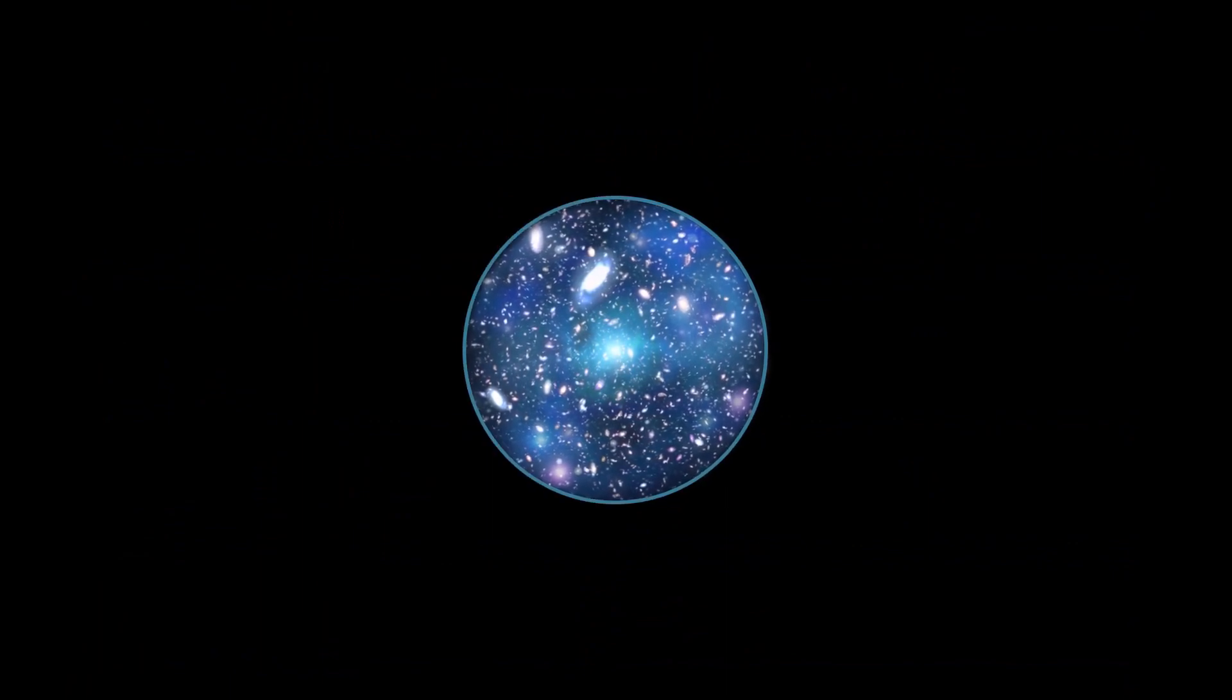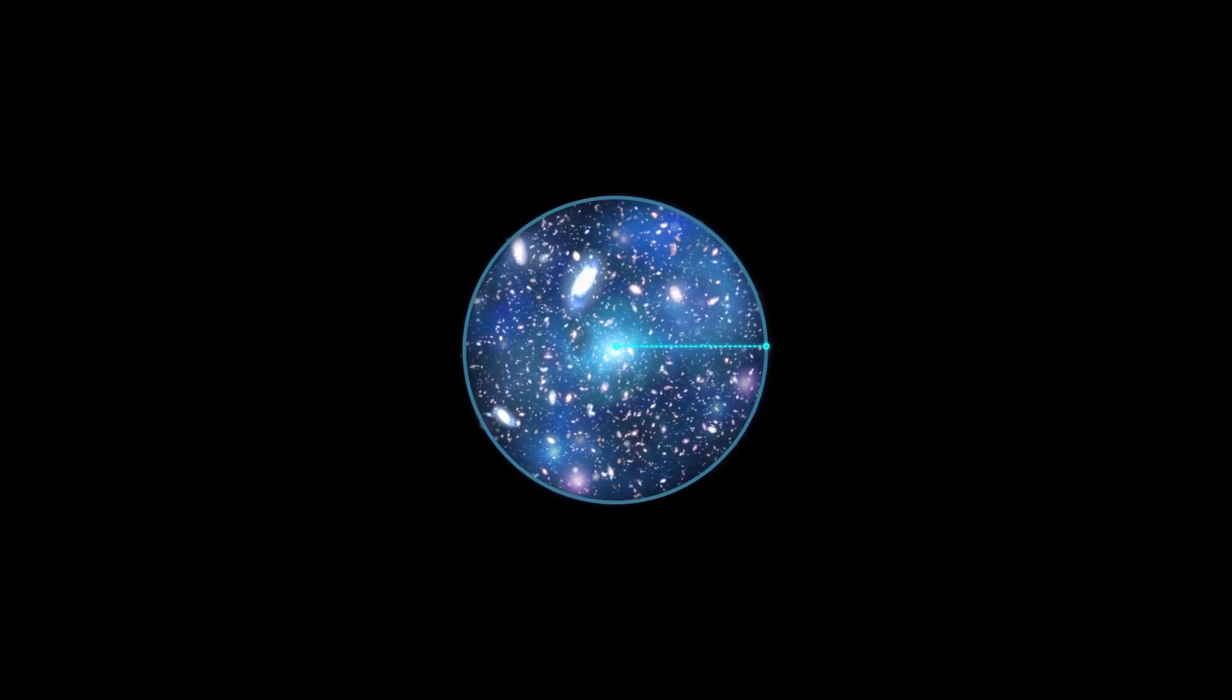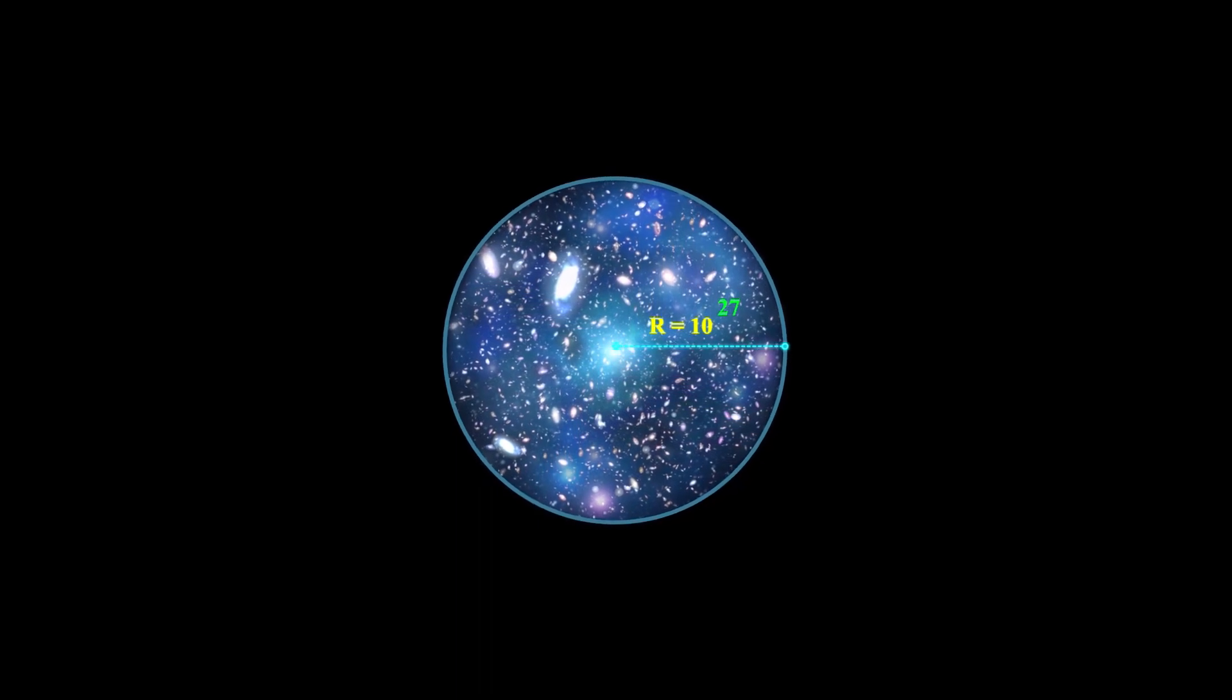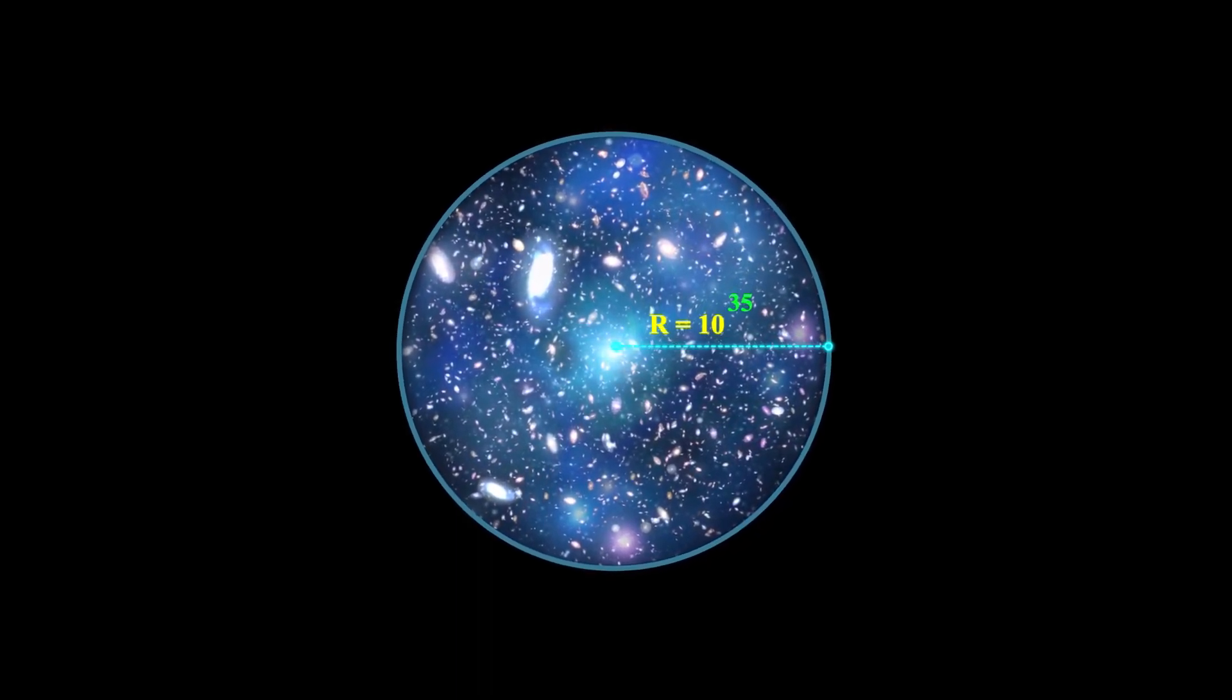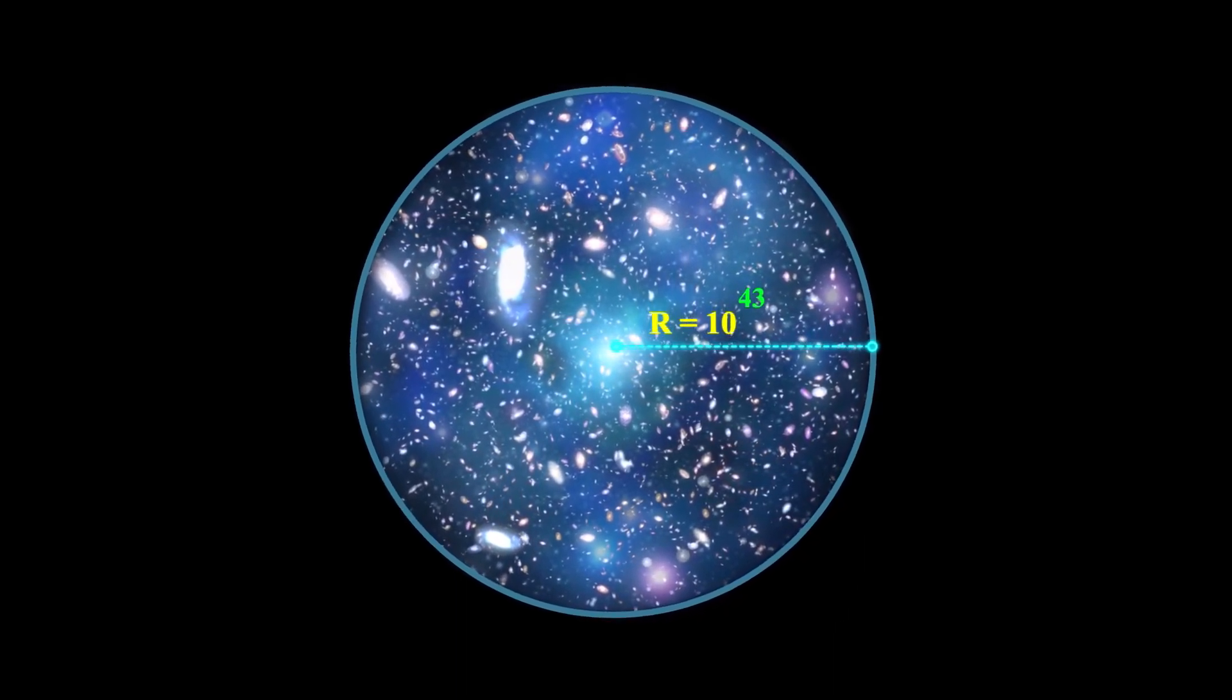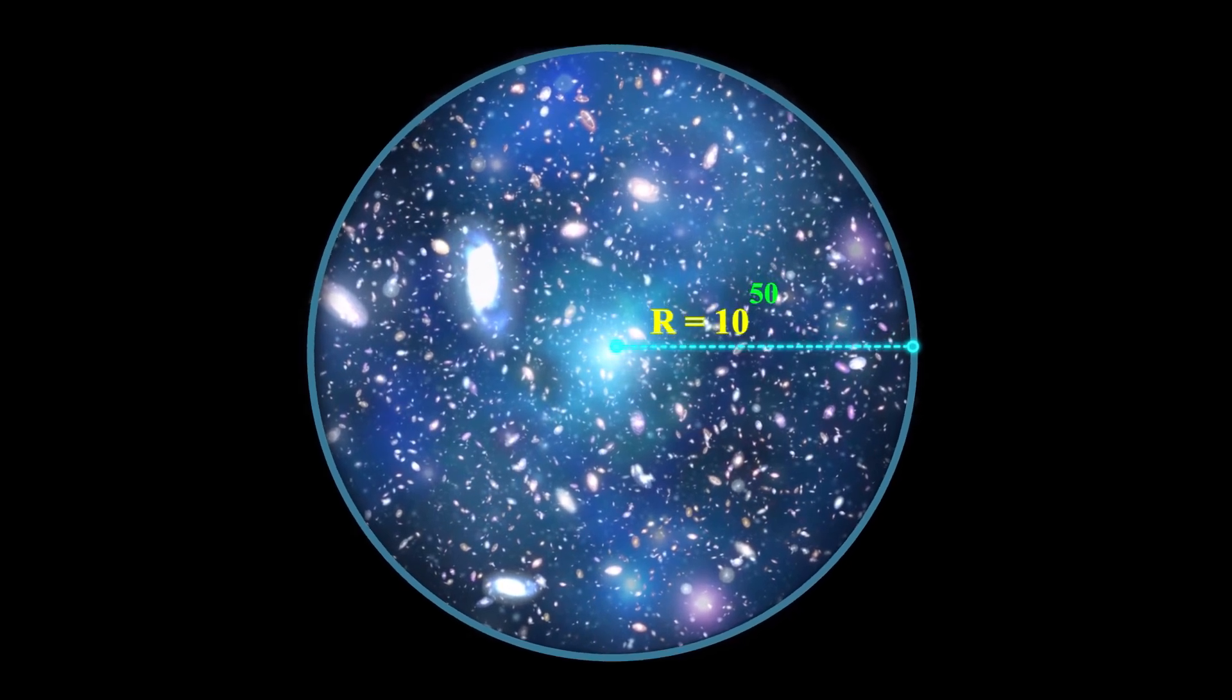10 to the power of 24 km is the radius of the observable universe. This means that science is unable to go further. Let us assume that the real value of the universe's radius would be 10 to the power of 50 km. By a simple calculation, we could find out that the speed of celestial objects at the edges of the universe is billions of times greater than that of light.